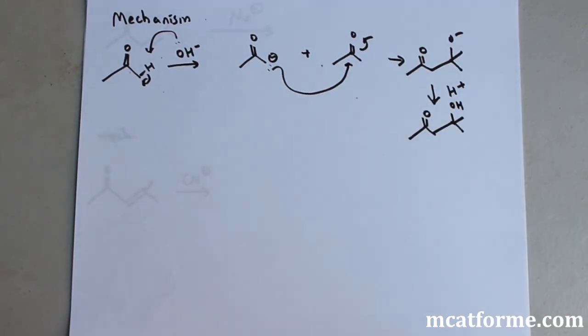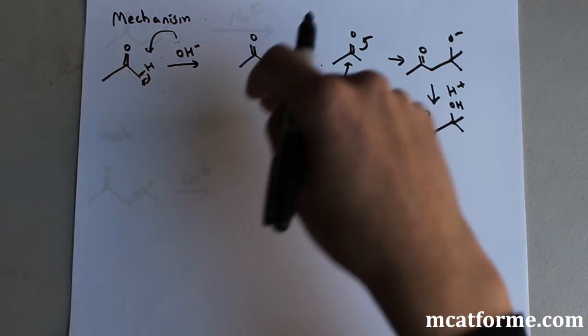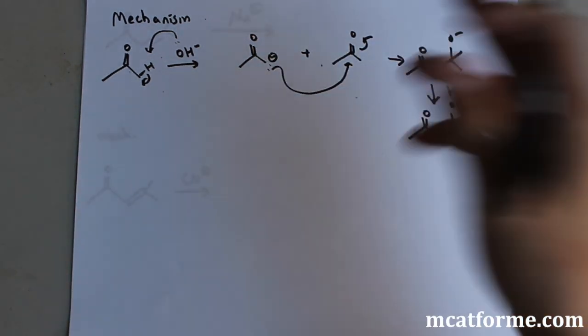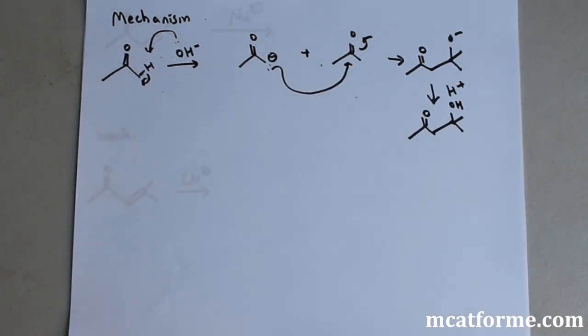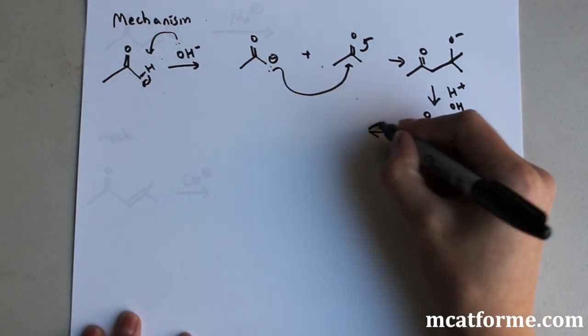So it may look kind of funny, it may look like how do we get that, but if you just follow the arrows that you drew, follow all the carbons, make sure all the carbons are there, you'll definitely be able to get the product.